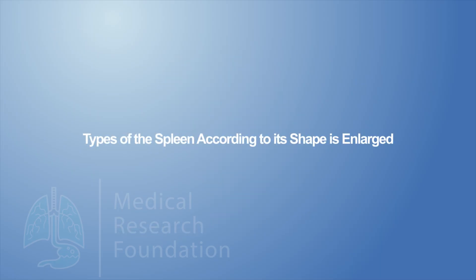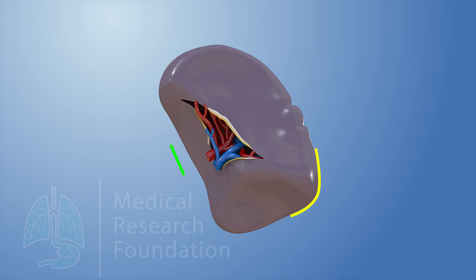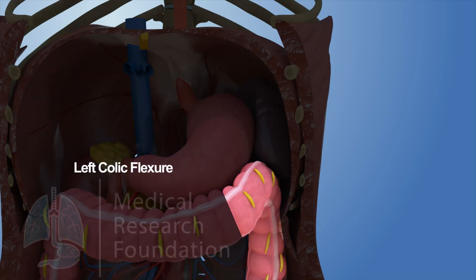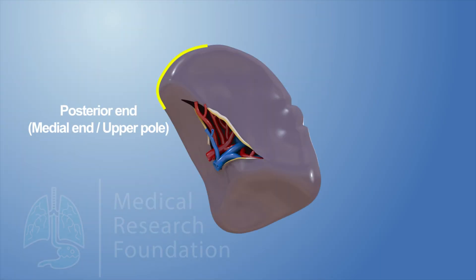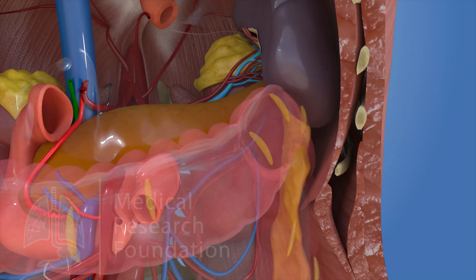The anterior end (lateral end, lower pole) is broad and is more like a border. It is directed downward, forward, and to the left, and is related to the left colic flexure in front. The posterior end (medial end, upper pole) is blunt and rounded. It is directed upward, backward, and medially towards the vertebral column, and is related to the upper pole of the left kidney.